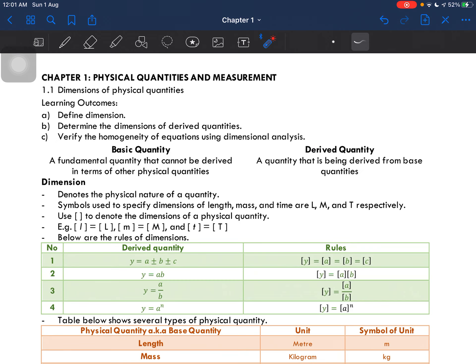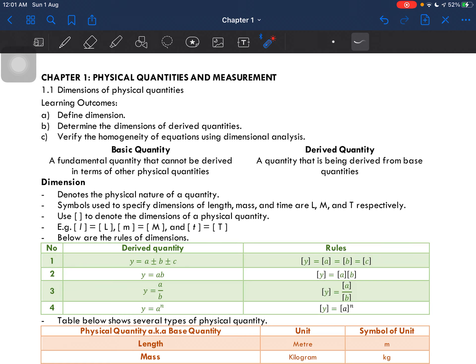So there are two types of quantity. The first one is basic quantity, while the other is derived quantity. Basic quantity is a quantity that cannot be derived, whereas derived quantity is a quantity that is obtained by deriving it from any base quantities.